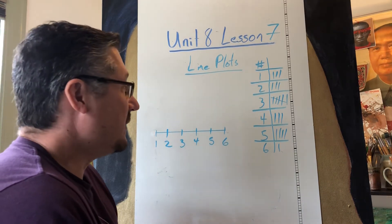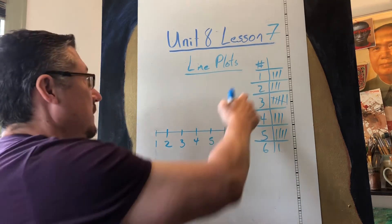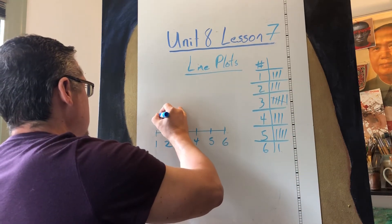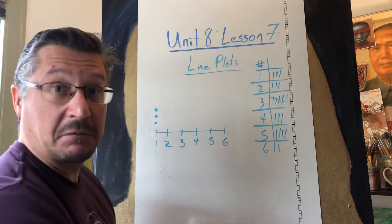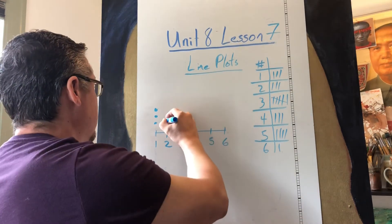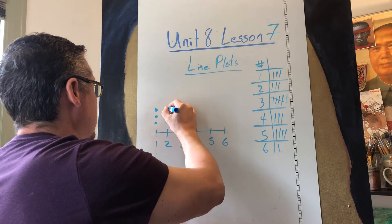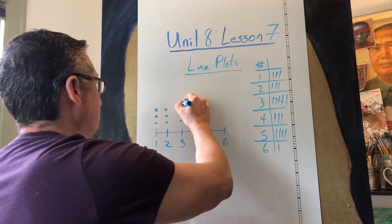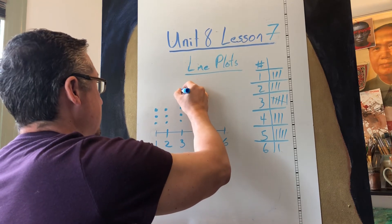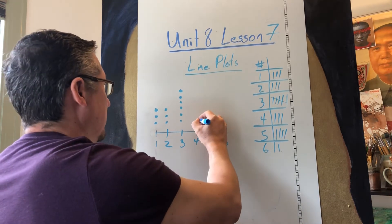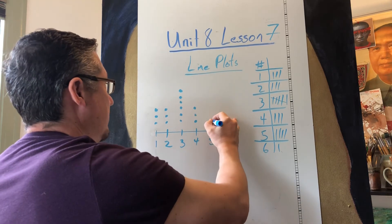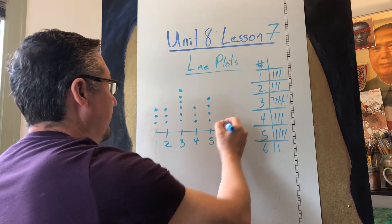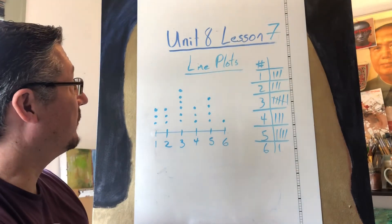That's very simple. Now I go to number one and it's three, so I put one, two, three dots. I go to number two — that's three. One, two, three. Then number three is six — one, two, three, four, five, six. Number four is three — one, two, three. Five is four — one, two, three, four. Six is one. That's it — that's my line plot. It's very simple.